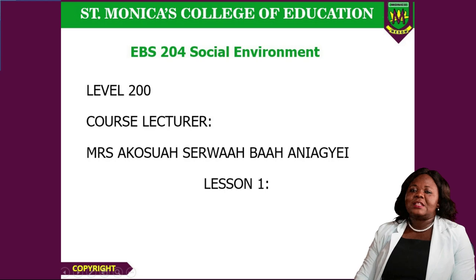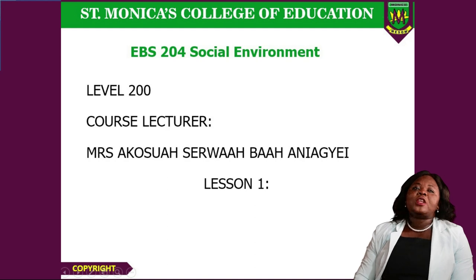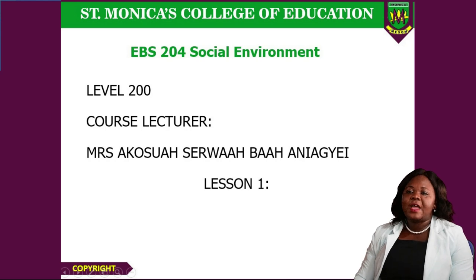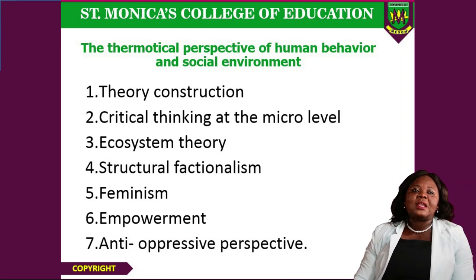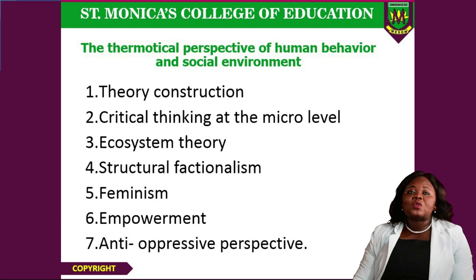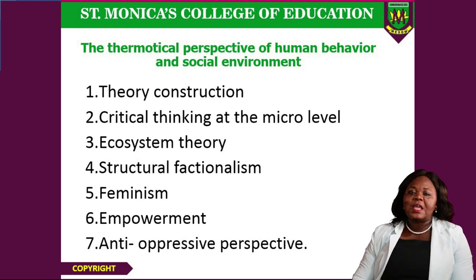At the end of the course, we are expecting the student teacher to be equipped with the prerequisite knowledge and skills and the ability to help impart knowledge into our younger ones who would help to keep the environment. The course title is The Social Environment, course code EBS204. For Unit 1, we are looking at various theories that underpin human behavior in our social environment, including theory construction, critical thinking at the micro, meso, and macro levels, the ecosystem theory, structural functionalism, feminism, empowerment, and anti-oppressive perspective.